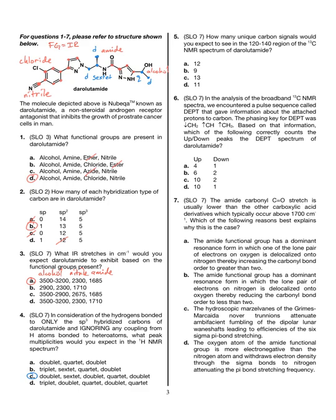Number 5: how many unique carbon signals would you expect to see in the 120 to 140 region of the C13 spectrum? This region corresponds to SP2 hybridized carbons. From question 2, the correct answer was B, which had 13. However, of those 13, 12 occur in that region and the one belonging to the carbonyl occurs away from the 120 to 140 region. So the correct answer is 12, which is A.